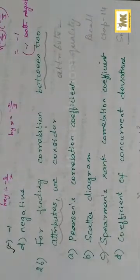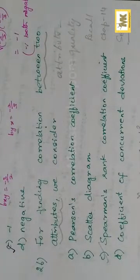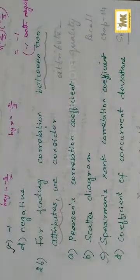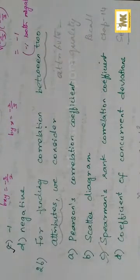For finding correlation between two attributes — attributes are quality. Marks are quantity. For finding correlation between quantities, we use Carl Pearson Correlation Coefficient — that is the formula to use.